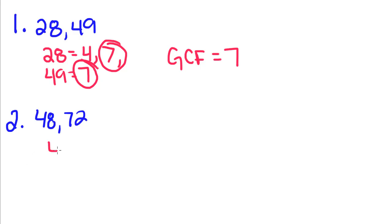This is our last example for greatest common factor. So 48 is divisible by 2, 3, 4, 6, and 8.